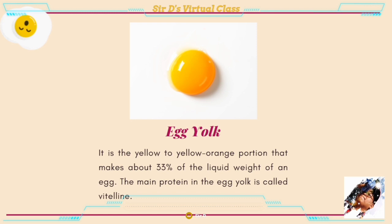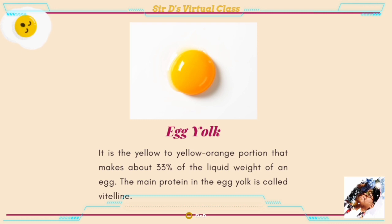Egg yolk: it is the yellow-orange portion that makes up about 33 percent of the liquid weight of an egg. The main protein in the egg yolk is called vitellin.